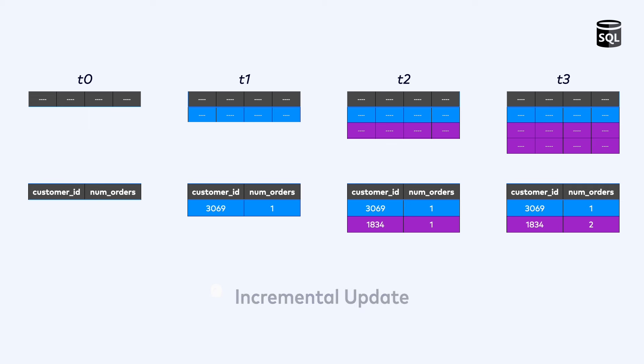More interesting is the incremental update strategy, where the cached results are automatically kept in sync with the underlying tables. And this is done incrementally, thus requiring less total effort than a complete refresh. When the materialized view is first created, the view is bootstrapped with a complete refresh, just as before. But then after each subsequent update to the underlying table, that change to the base table is combined with the previous version of the materialized view to produce an updated view. In our example that is counting orders for each customer, each time an order is added to the orders table, the counter for that specific customer is incremented in the materialized view. If the orders table is large, this incremental update strategy will be dramatically more efficient than scanning the table each time.